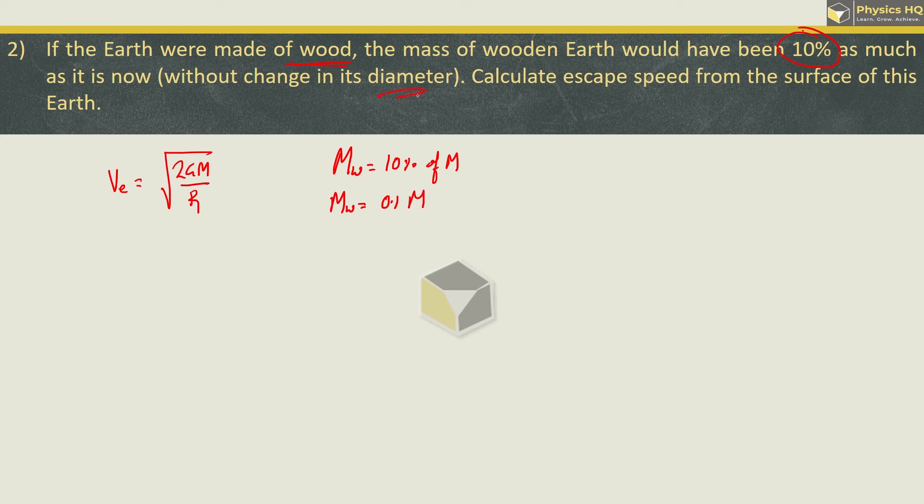The diameter is the same, which means the radius is also the same. So we can write that escape velocity is directly proportional to the square root of m. So we can write escape velocity for wooden Earth upon escape velocity of Earth equals the square root of mass of wooden Earth upon the mass of Earth. Mass of wooden Earth is 0.1 the original mass, so this m and m cancel.